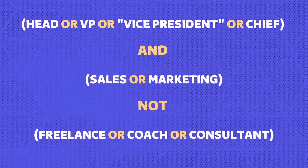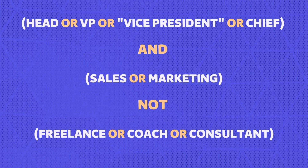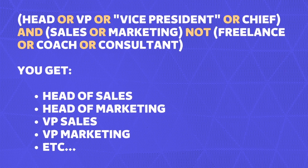For example: in the first parentheses, I add function-related keywords — head, VP, 'vice president' (with quotes because it's two words), or chief. Then AND, and in the second parentheses the field-related keywords — sales OR marketing. Then NOT, and in the last parentheses the keywords to exclude — freelance, coach, or consultant. This search will look for head of sales, head of marketing, VP sales, VP marketing, vice president sales, vice president marketing, chief sales, and chief marketing. As you find new function or field keywords, just add them with OR and the expression gets more precise.